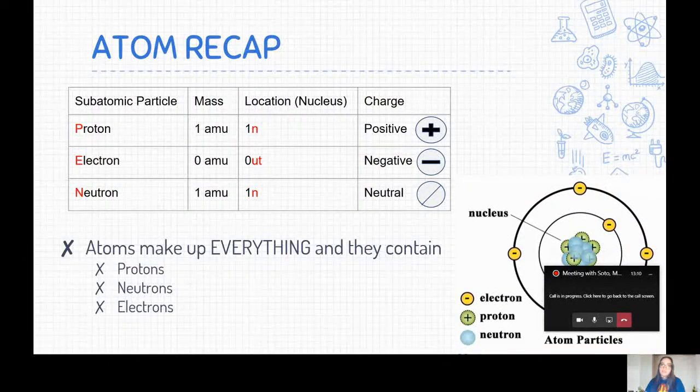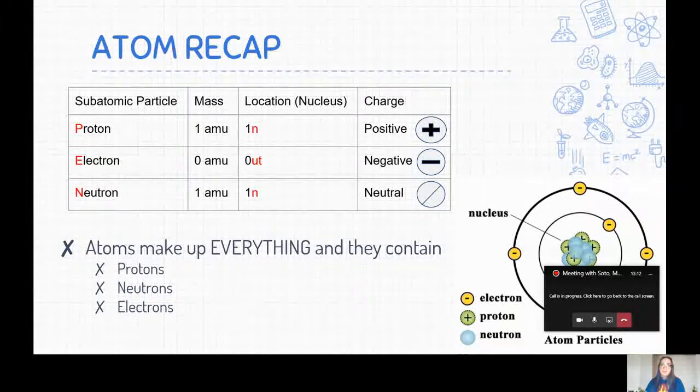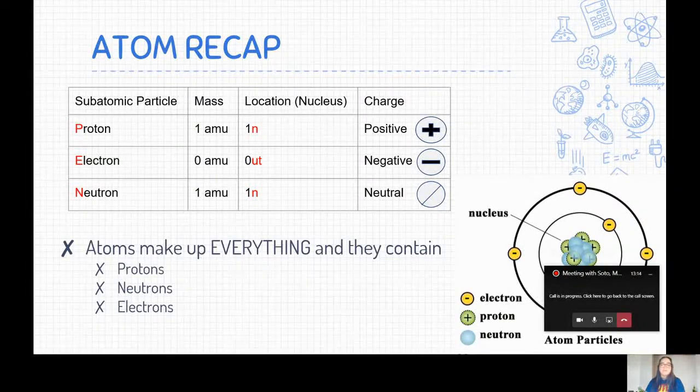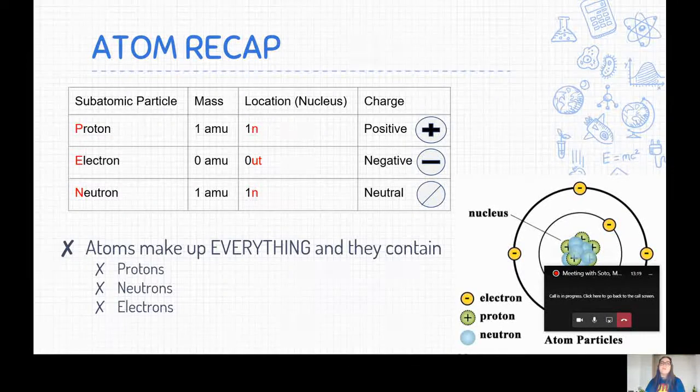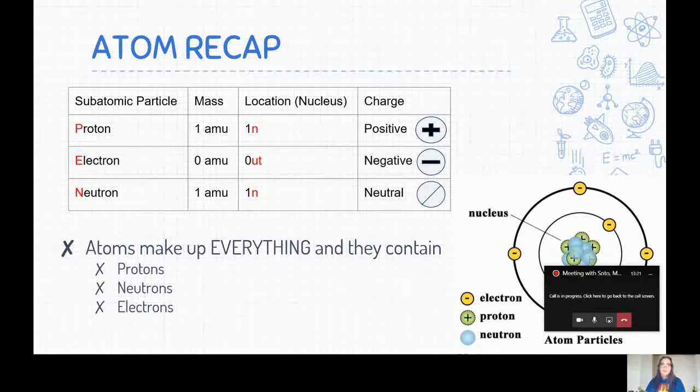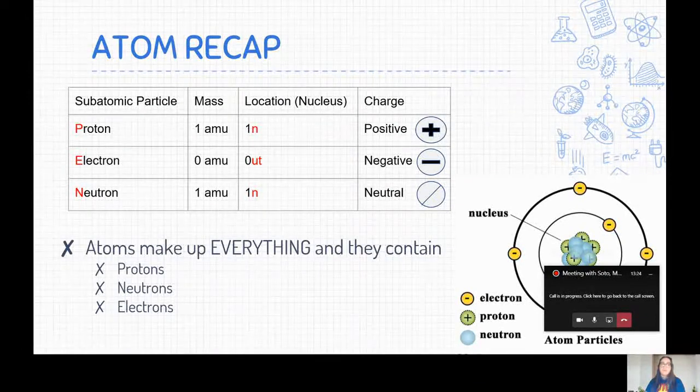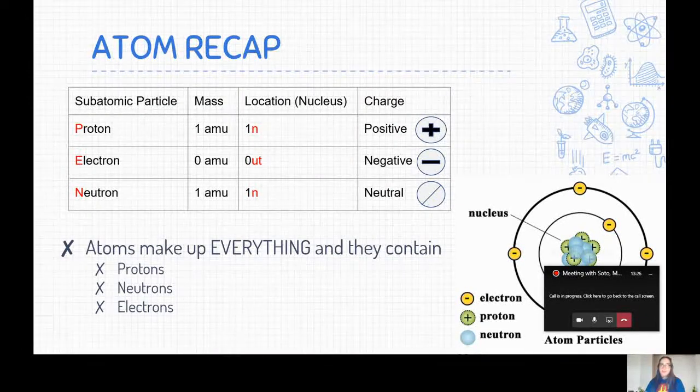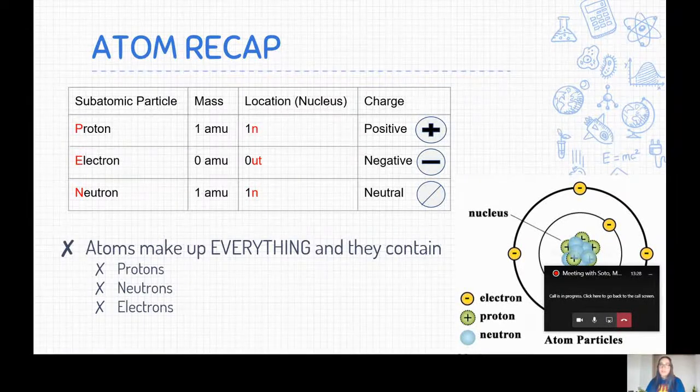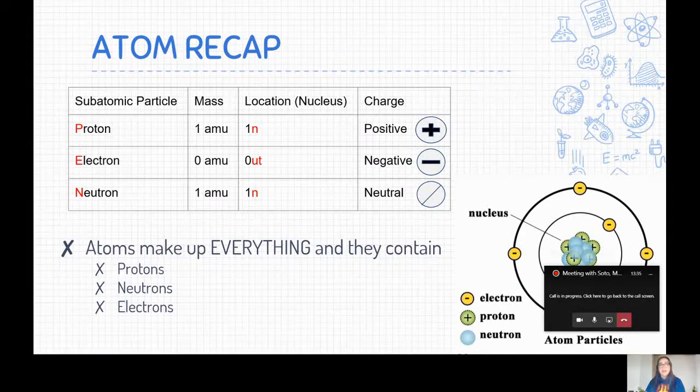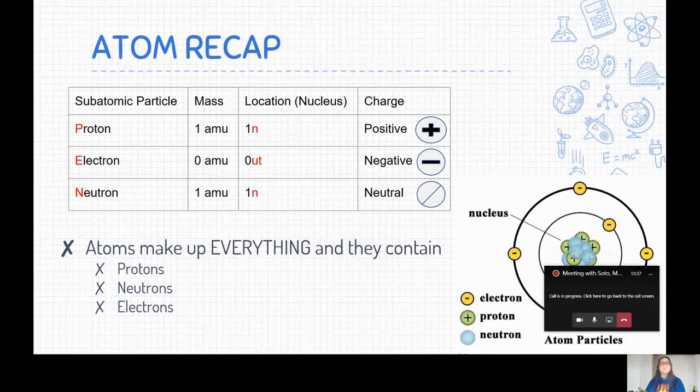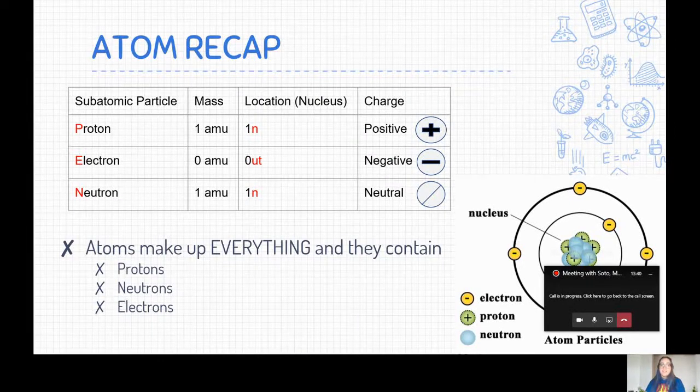So last class we talked about the periodic chart. I need you to remember that periodic chart. I need you to write it as many times as you need to in order to remember it. And remember that atoms are what makes everything up. Your body's made up of atoms. The water that you drink is made up of atoms. The plants outside your house are made up of atoms. Your dog is made up of atoms. The light bulb in your ceiling is made up of atoms. So make sure you remember whether it's alive or dead, everything is made up of atoms.